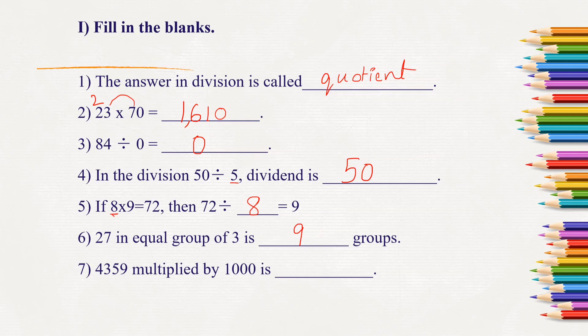Here, 4359 multiplied by 1000 is. Again, here we need to bring out the 3 zeros first. Then 4359 into 1 is 4359. So the product will be 43,59,000.